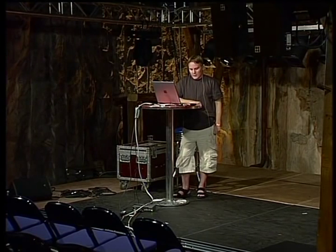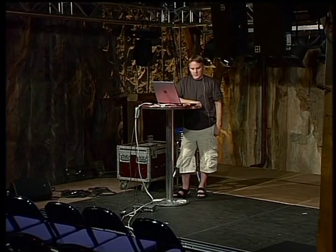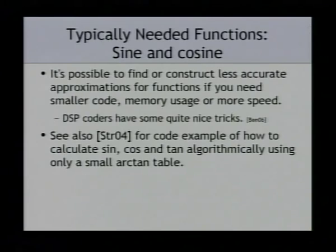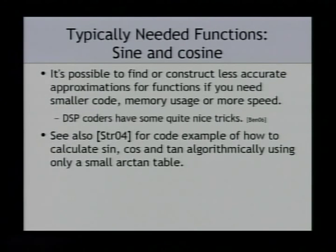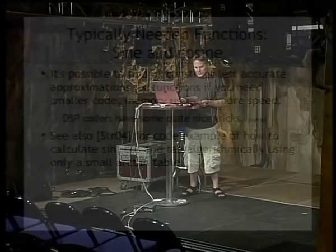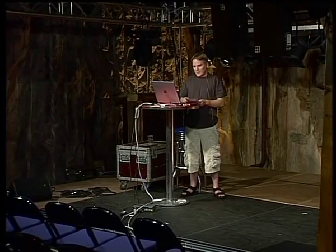The fixed point primer in the book OpenGL ES Game Development also shows code to calculate trigonometric functions using only a very small lookup table of arctangents — like 17 entries or so, if I remember correctly.